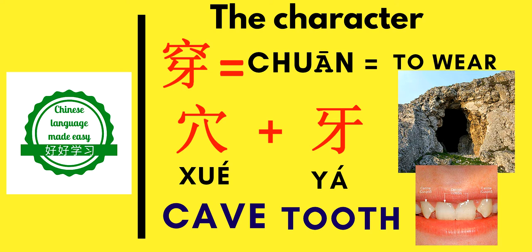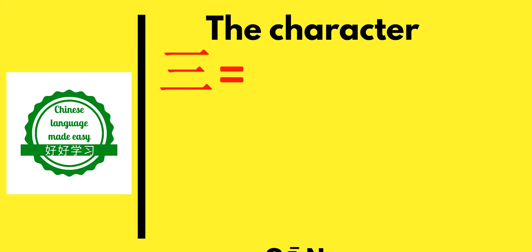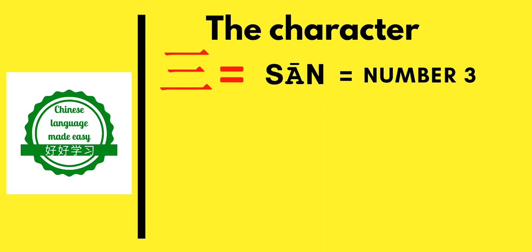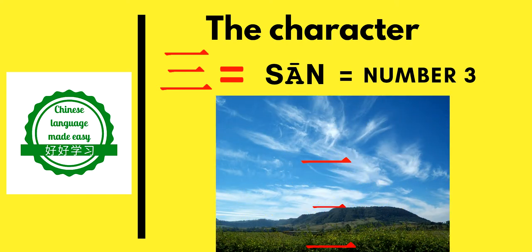The next character is 三 (sān), which means 'three' in Chinese. These are three planes: the first plane represents heaven or skies, the second plane represents man, and the third represents the earth. According to ancient concepts of Chinese people, this scene is literally in front of you, and we are going to see how it helps us in this lecture.